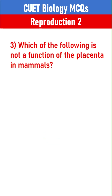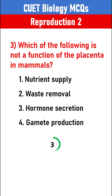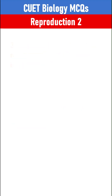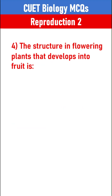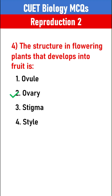Which of the following is not a function of the placenta in mammals? Gamete production. The structure in flowering plants that develops into fruit is Ovary.